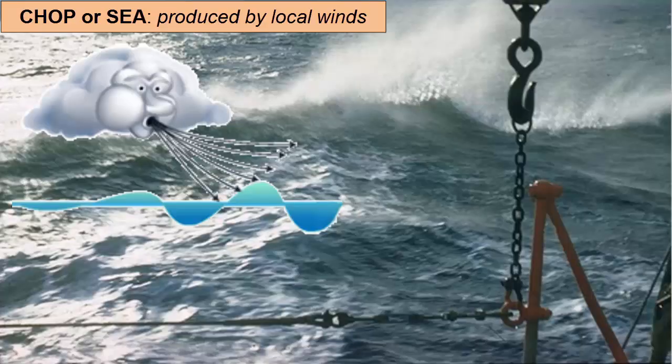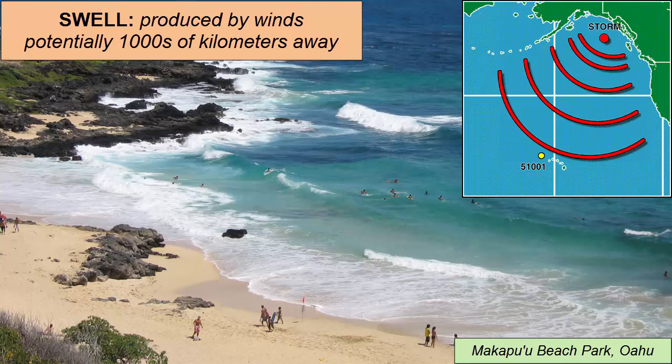Some waves, called chop or sea, are produced by winds locally, but most of the waves you see at a beach — called swell — are coming from winds in far-distant storms, sometimes thousands of miles away.